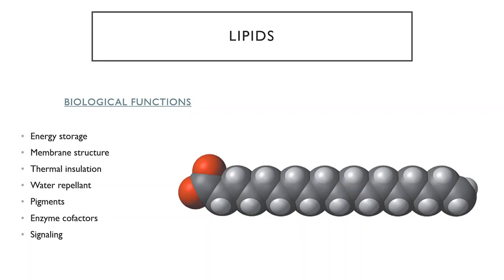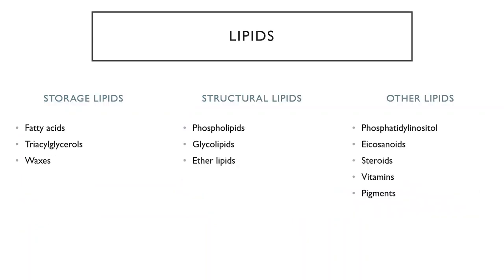There are also a number of enzyme cofactors and signaling molecules that are lipids or lipid-derived. Broadly speaking, we can divide lipids into those involved in storage, those involved in the structure of the membrane, and others that have one of those other jobs. The storage lipids include the so-called fatty acids and things derived from fatty acids, including triacylglycerols and waxes. The structural lipids include phospholipids, glycolipids, and some complex molecules called ether lipids.